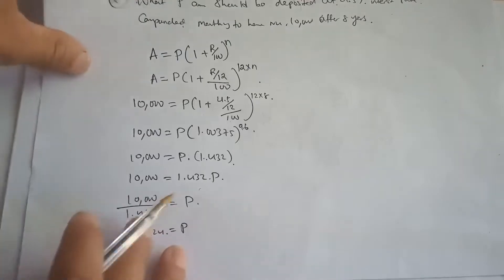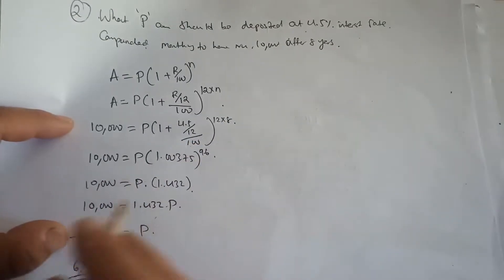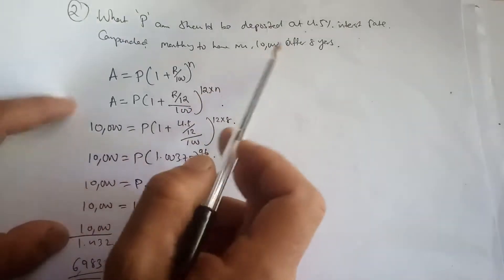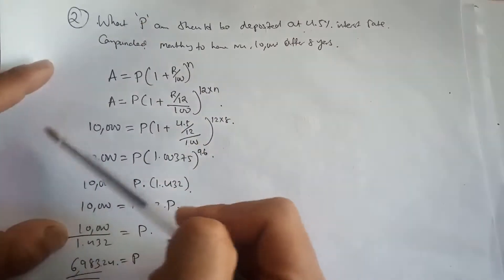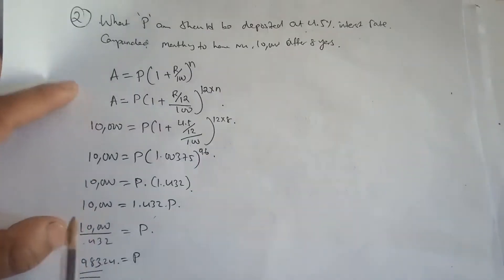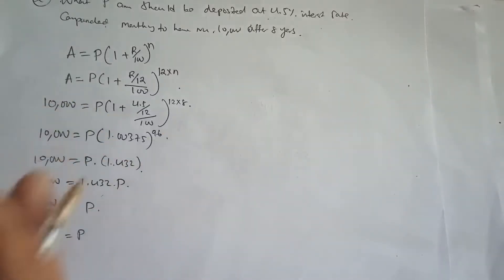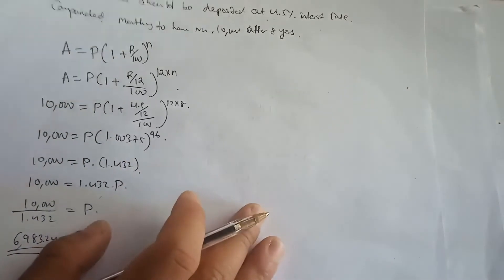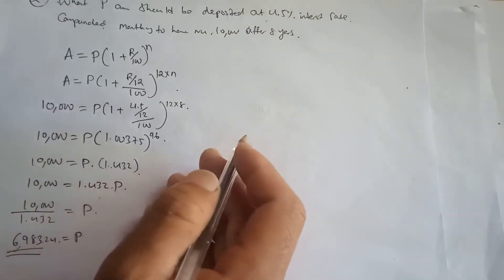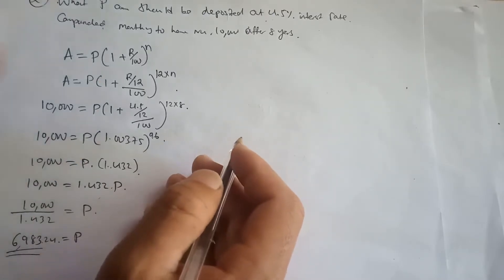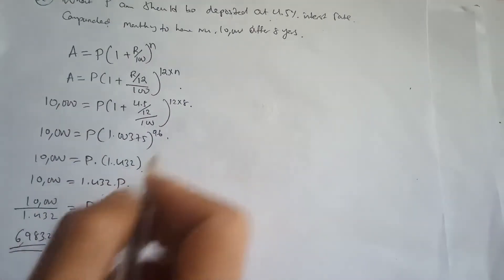For compound interest, the only thing you need to know is the formula. Identify the numbers: number of years, rate of interest, and whether to find P or A. Then simply substitute and calculate. Give a like and thank you!